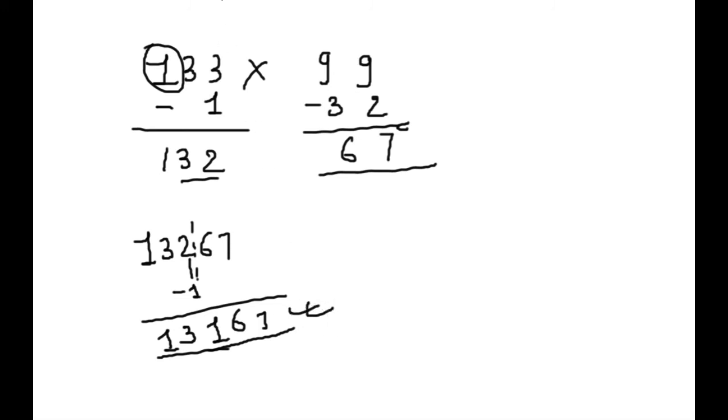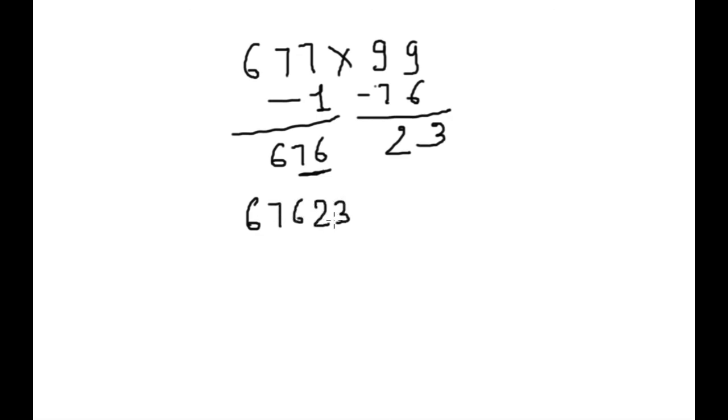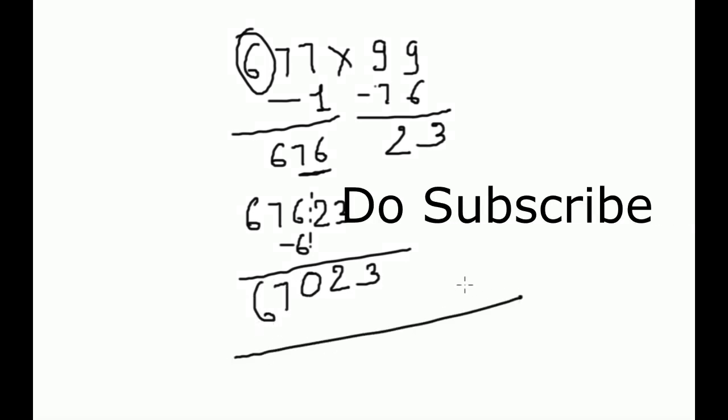677 into 99. Step 1. Minus 1, 676. 76. Minus 76. 32. Now we will write 67623. This 6, we will subtract from here. 32067. This is our answer.